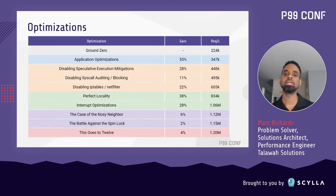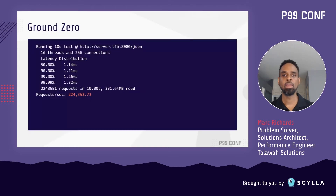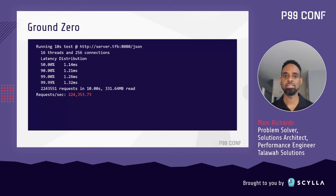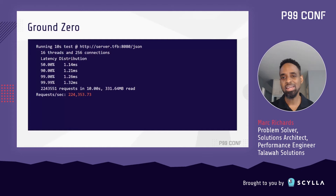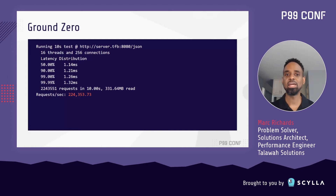Before we dive into any other optimizations, we're just going to take a look at the initial state. We start out at 224,000 requests per second — that's already really fast. The latency numbers are also really good: P99.99 is just 1.32 milliseconds. On the surface, this looks more like an after picture than a before.